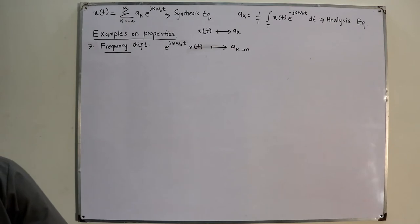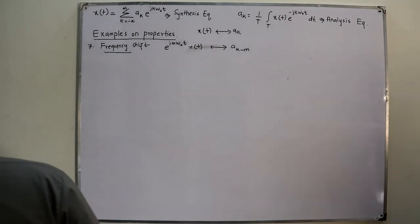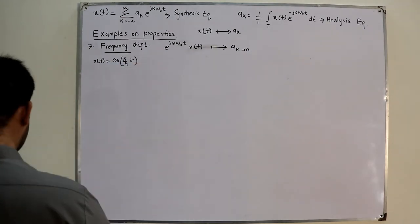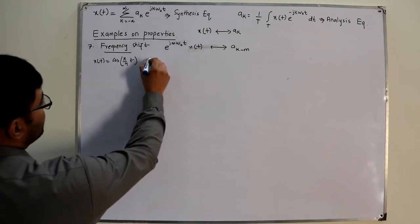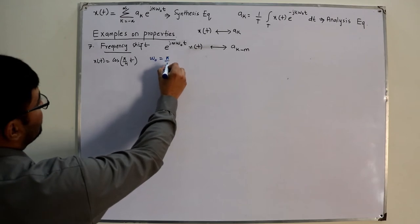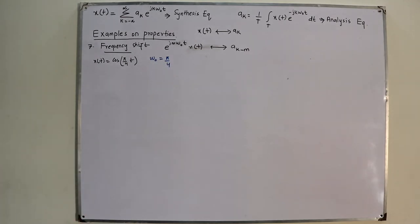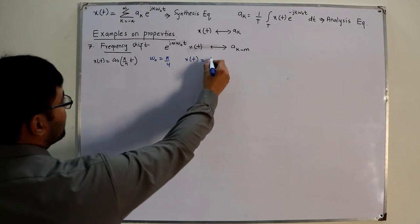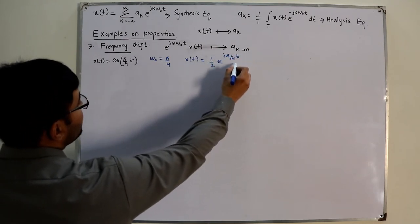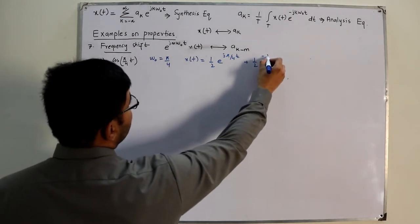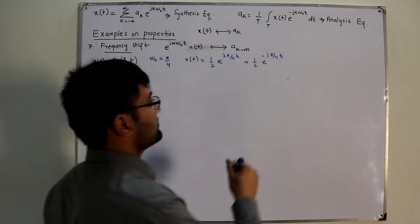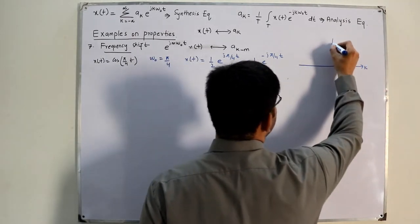Example: x(t) = cos(π/4 · t), where ω₀ = π/4. We can write x(t) as (1/2)e^(j·π/4·t) + (1/2)e^(-j·π/4·t), giving Fourier coefficients at k = +1 (value 1/2) and k = -1 (value 1/2). Now let x₁(t) = e^(j·π/4·t) · x(t).